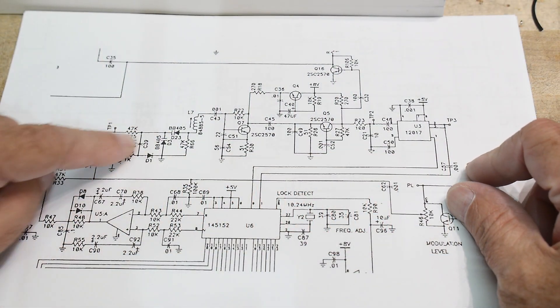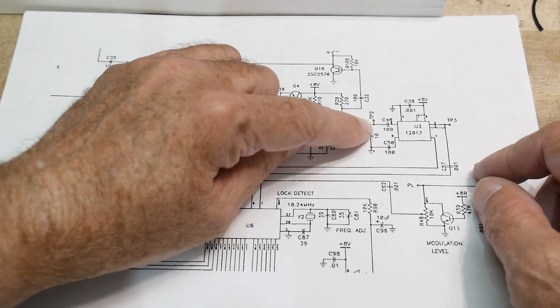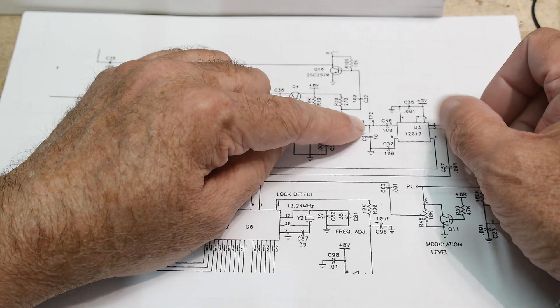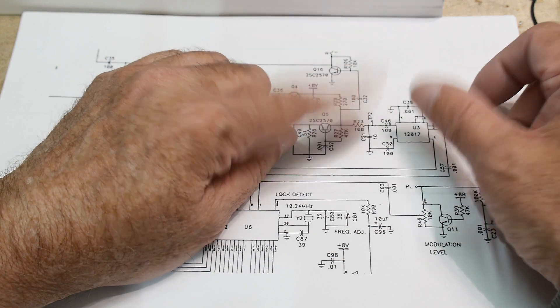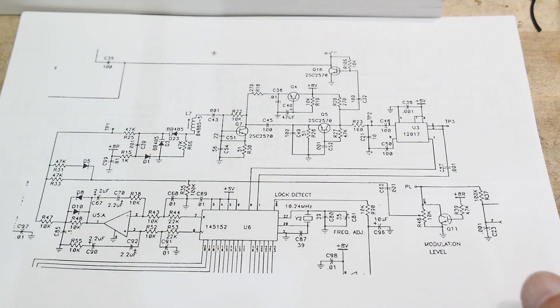Continuing our journey, we've made it through the VCO, and now we go into this thing, U3, it is a 12017. And let's take a look at a 12017.